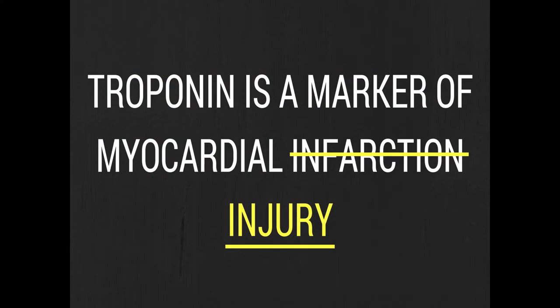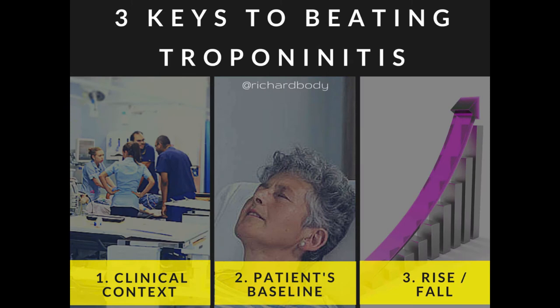What we've established here is that troponin is not a marker of myocardial infarction — it's a marker of myocardial injury. If there's a troponin rise, it's pretty good at telling us that a myocardial injury is present. Something has caused that injury, but only a clinician can sort that out. A clinician uses the clinical context to tell us whether that injury was caused by an acute MI, and which type of MI. The lab test can't tell us — a clinician has to do it. That's why clinical context is so important.